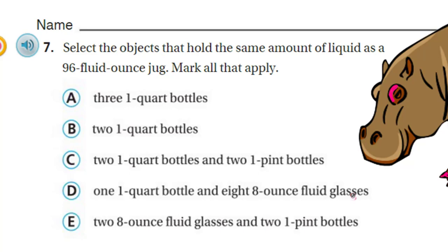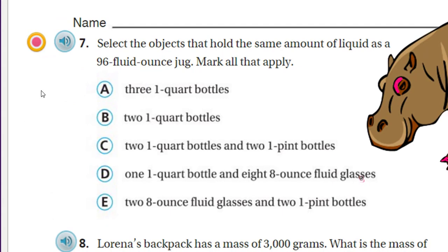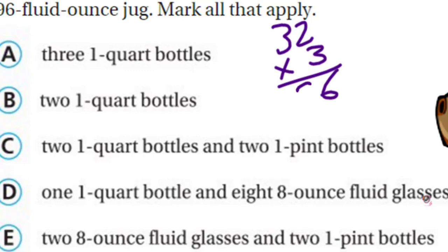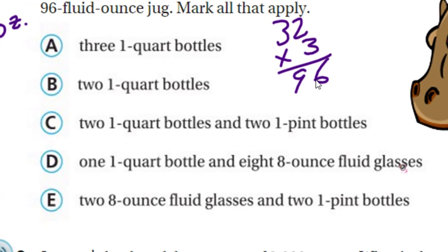With three one-quart bottles, we need to know how many fluid ounces are in one bottle. There are 32 ounces in one quart. So three of them: 32 times 3 equals 96. And I do actually get that — so option A is correct!